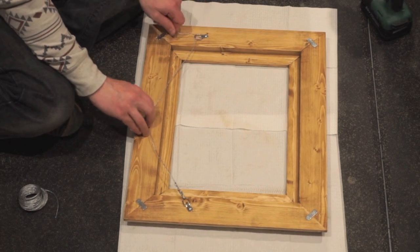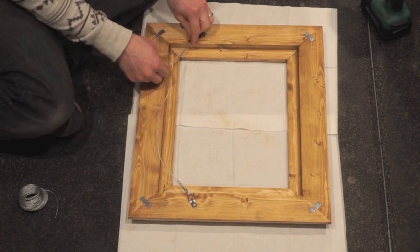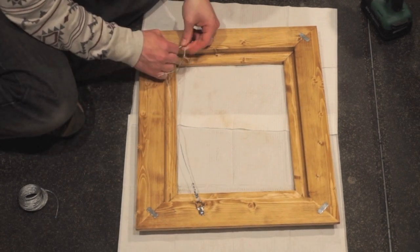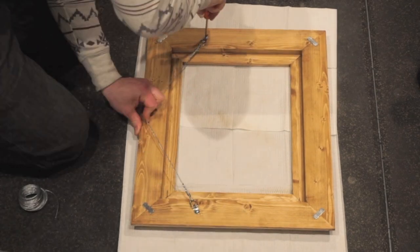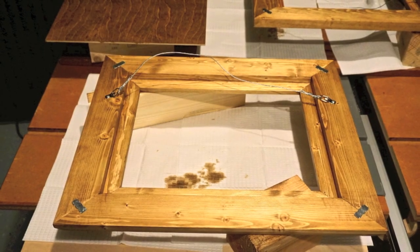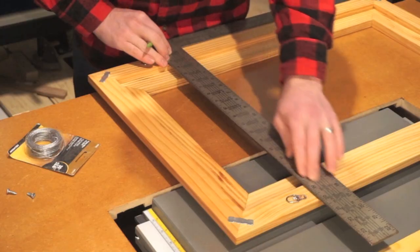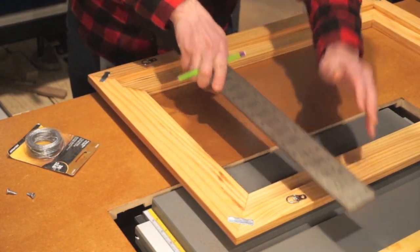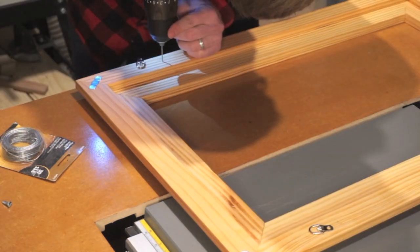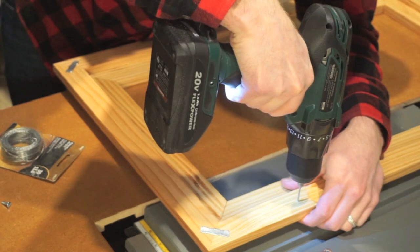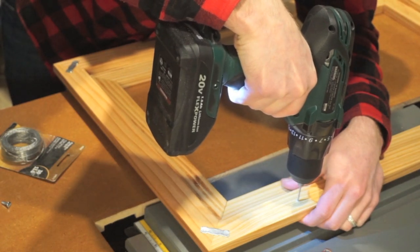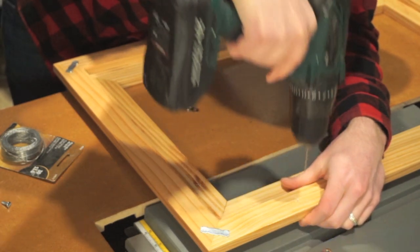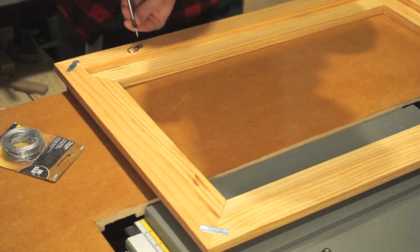I recommend using D-rings and picture frame wire as I did for your mounting hardware. They are very easy to hang and level once installed. You'll want to mount the D-rings approximately a third of the way down from the top of the frame. Picture frame wire enables the frame to be leveled with ease and there's no way to misalign it on my end. I first drilled shallow pilot holes for the screws and then gently mounted the D-rings in place.